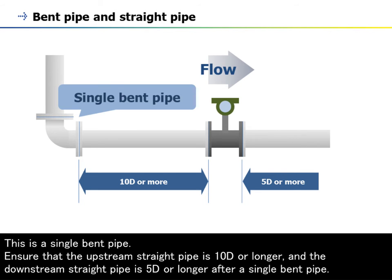This is a single bend pipe. Ensure that the upstream straight pipe is 10D or longer, and the downstream straight pipe is 5D or longer after a single bend pipe.